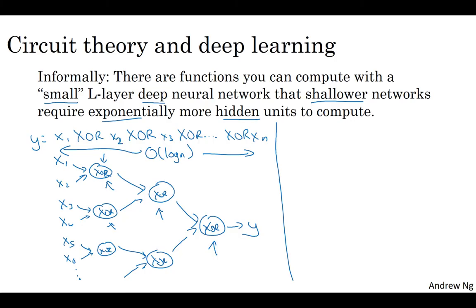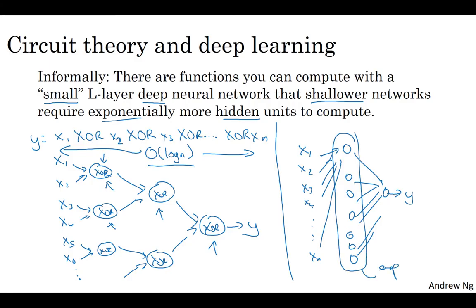But now, if you're not allowed to use a neural network with multiple hidden layers with in this case order log N hidden layers, if you're forced to compute this function with just one hidden layer, so you have all these things going into a set of hidden units and then these things then output Y. Then in order to compute the parity of X or to compute this XOR function, this hidden layer will need to be exponentially large because essentially you need to exhaustively enumerate all two to the N possible configurations or on the order of two to the N possible configurations of the input bits that result in the exclusive OR being either one or zero. So you end up needing a hidden layer that is exponentially large in the number of bits. I think technically you could do this with two to the N minus one hidden units, but that's the order two to the N. So it's going to be exponentially large in the number of bits.